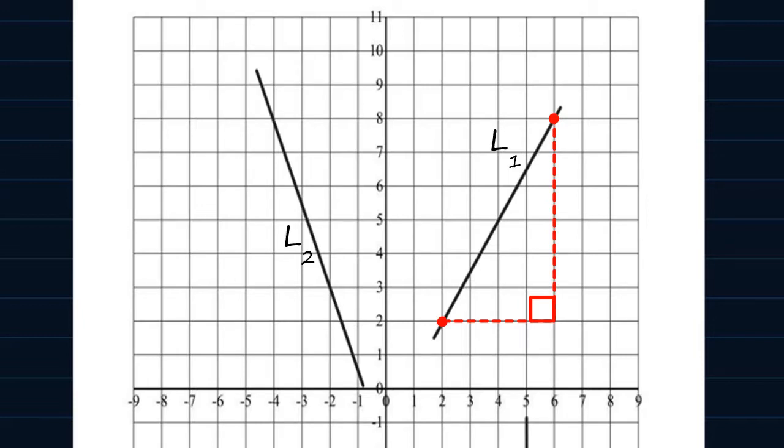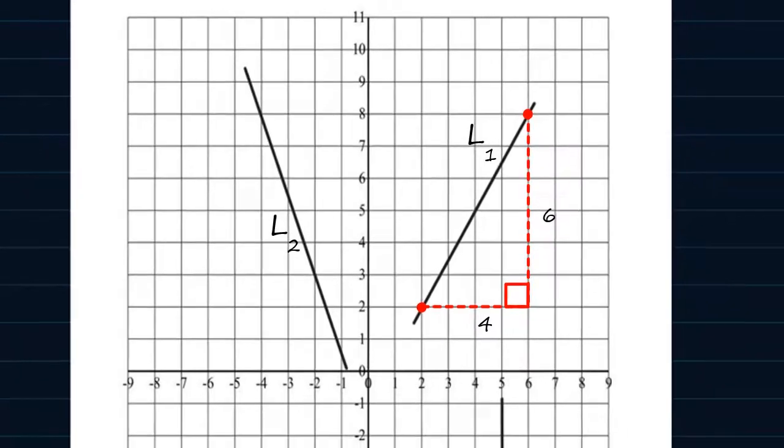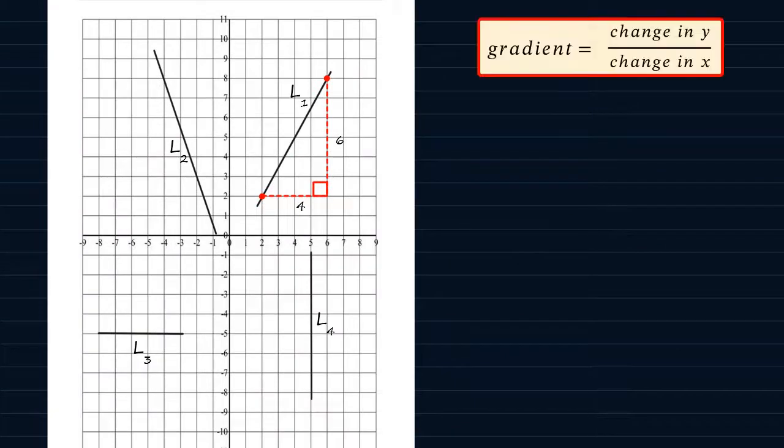Now as you can see, we have four units parallel to the x-axis and six units parallel to the y-axis. And since gradient is calculated as change in y over change in x, we will have the gradient as 6 over 4, which can be reduced to 3 over 2 or 1.5.